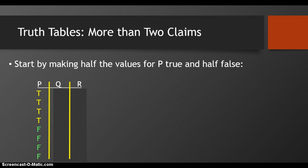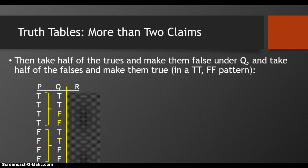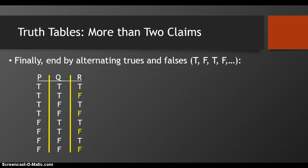Start by making half the values for P true and half false. Then take those trues and make half of those the opposite — so we'll have two trues and two falses — and do the same for the falses, making half of those trues. To keep it simple, use a true-true, false-false, true-true, false-false pattern. End by alternating trues and falses. You can do this for any truth table: the very last non-repeating term will be alternating trues and falses. You can also start with the last term and build up, doubling the number of trues and falses.